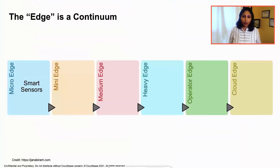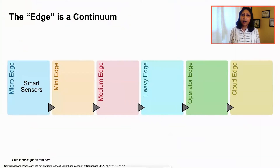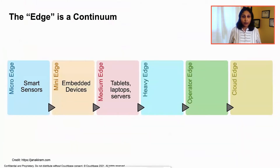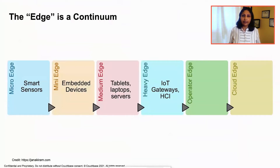Starting with micro edge, these are commonly the things in IoT — smart sensors capable of minimal data storage and processing, and capable of running tiny AI/ML models. Then you've got the mini edge — these are your embedded devices capable of running embedded operating systems such as embedded Linux. Then you've got your medium edge: smartphones, laptops, desktops, commodity servers. Heavy edge devices are specialized network appliances, IoT gateways, or HCIs — hyper-converged infrastructure devices.